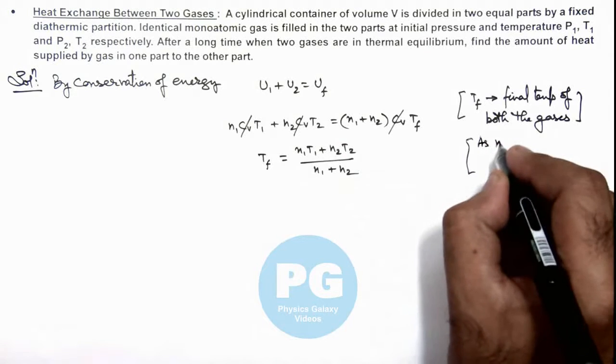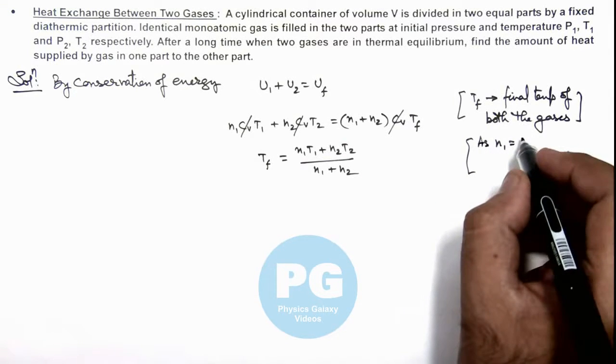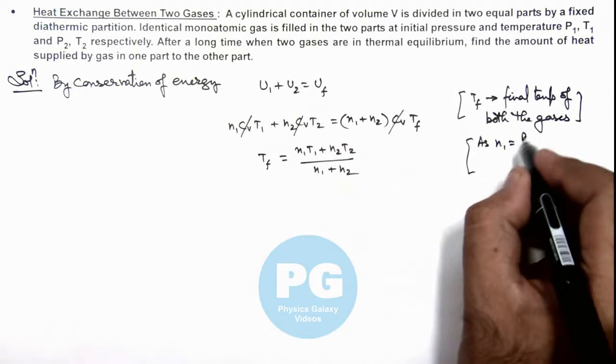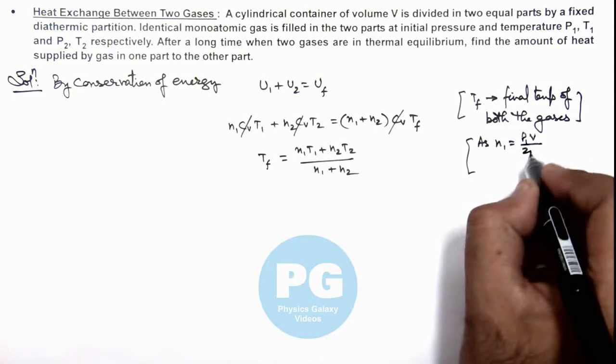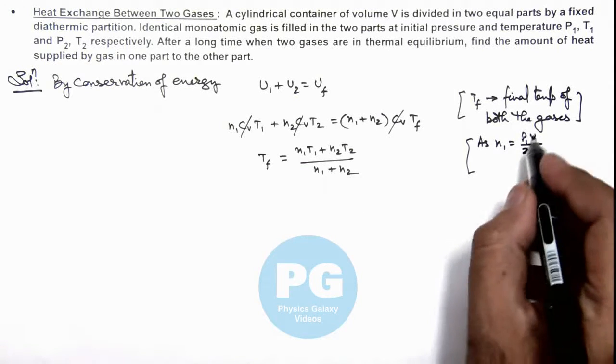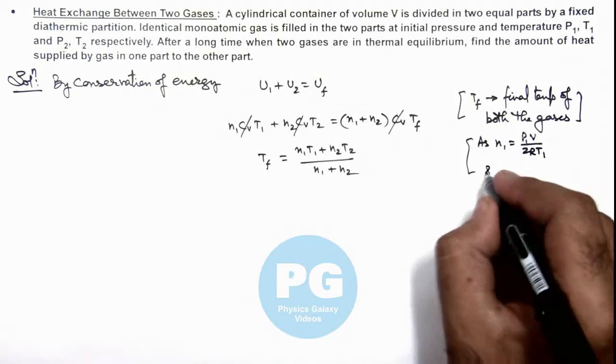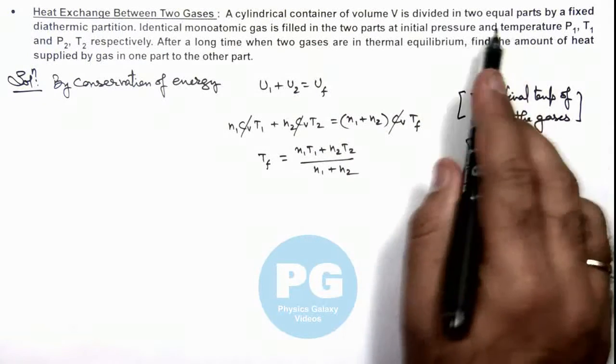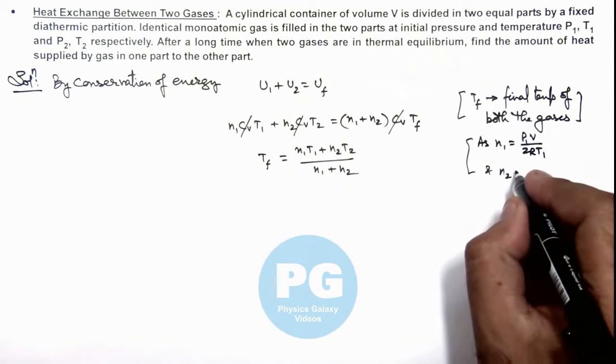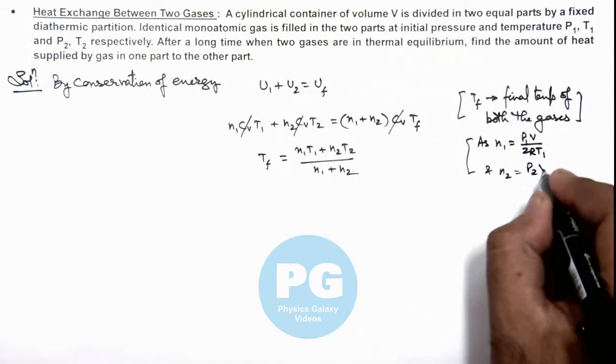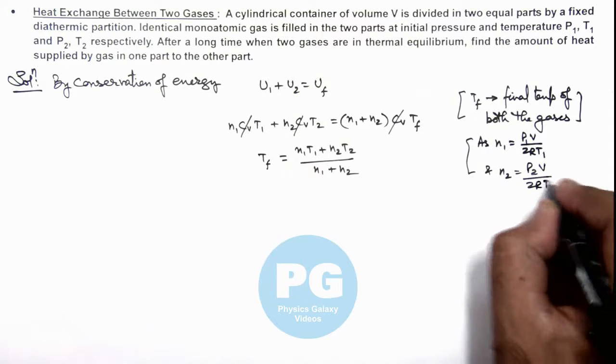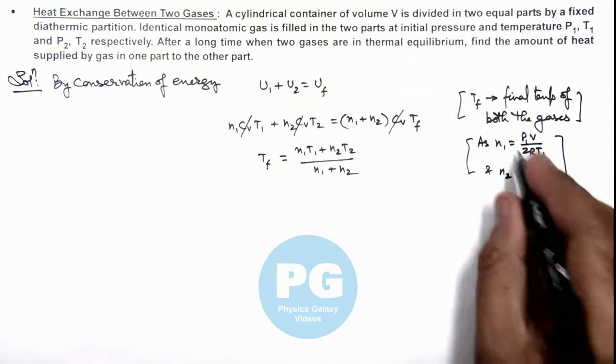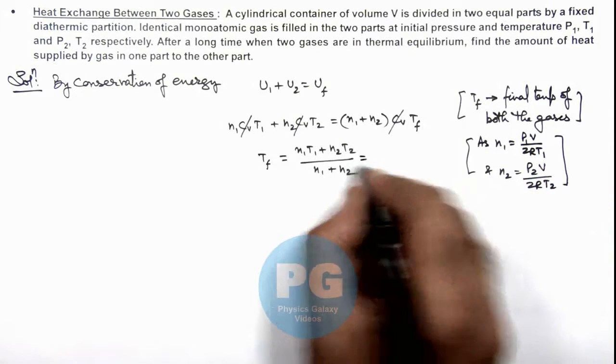n₁ is equal to P₁V/(2RT₁). Volume we are taking as V/2, as total volume of container is V which is divided in two equal parts. So n₂ is equal to P₂V/(2RT₂). If we use these values of n₁ and n₂ and substitute here,